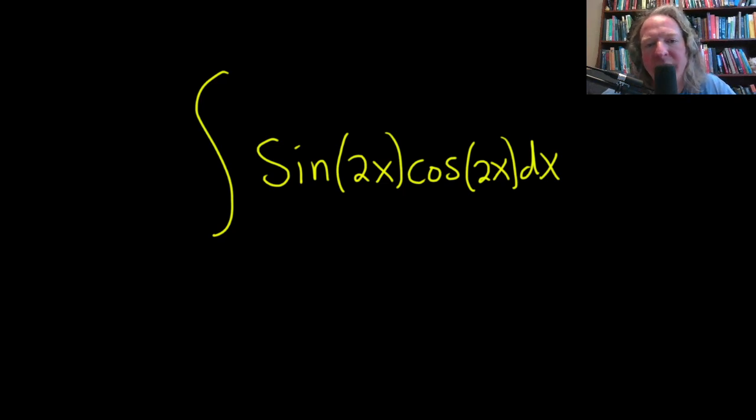In this example, we're going to integrate sine of 2x times the cosine of 2x. Let's go ahead and work through this solution. So there's actually various ways to do this problem. You can use a trig identity right from the beginning.